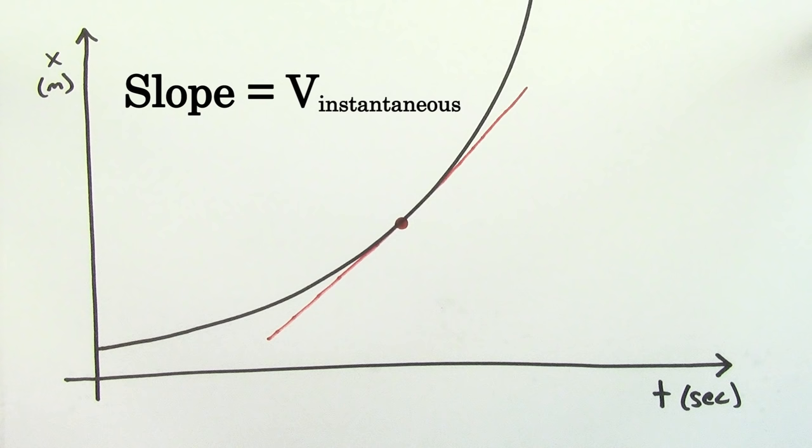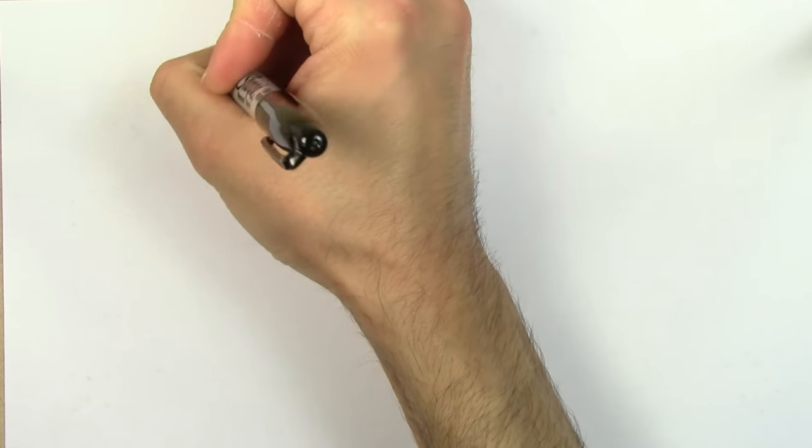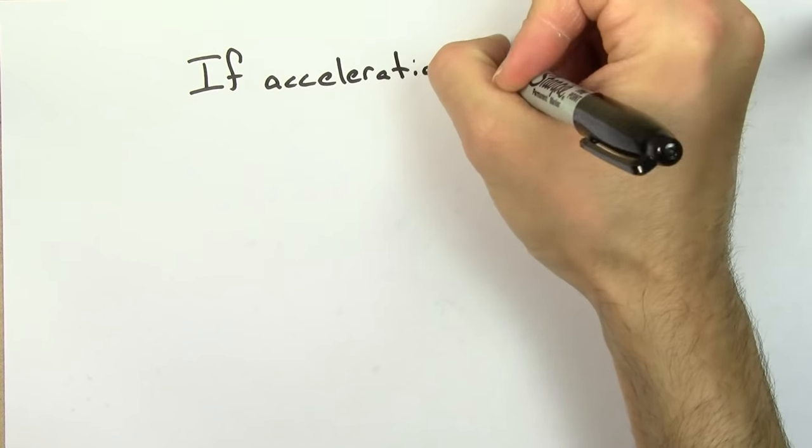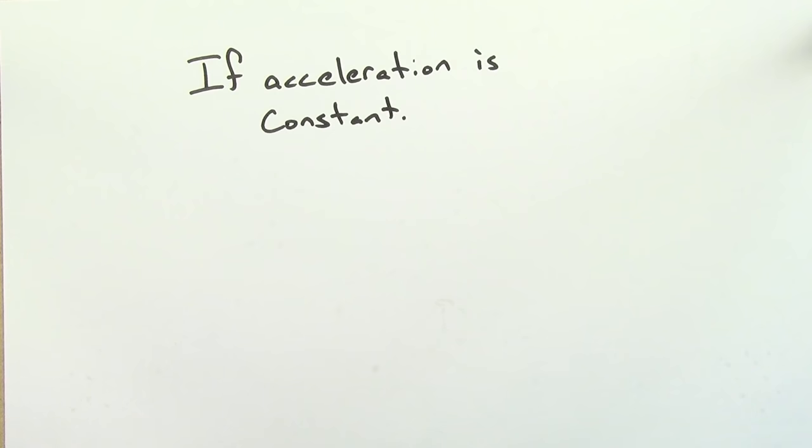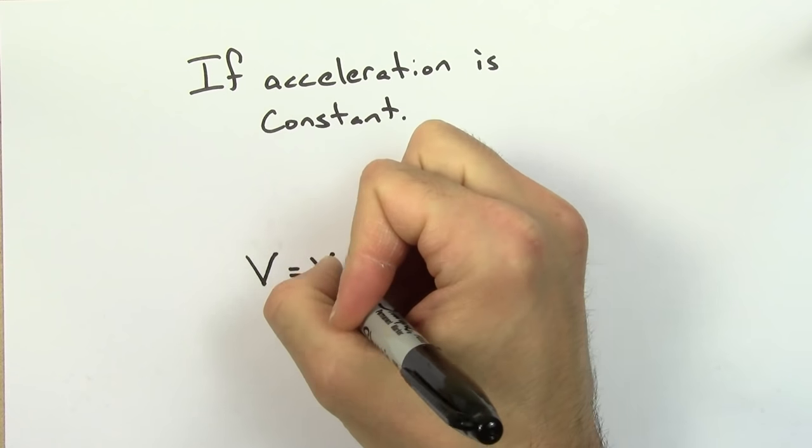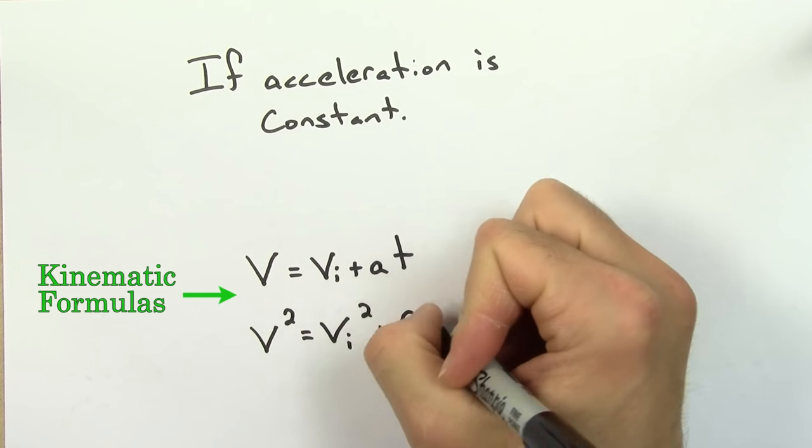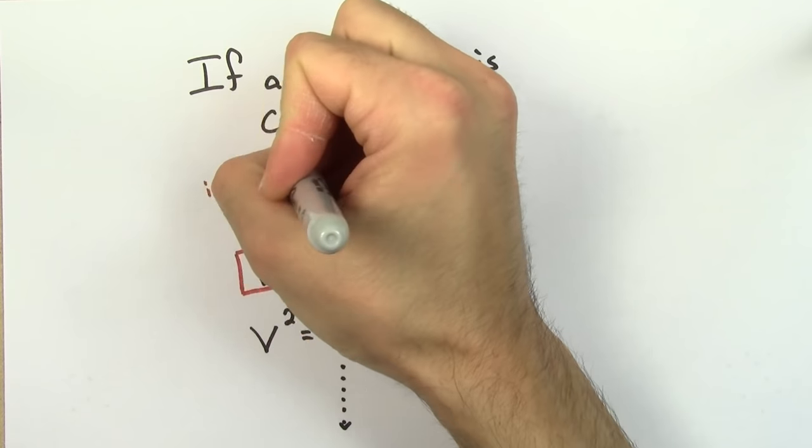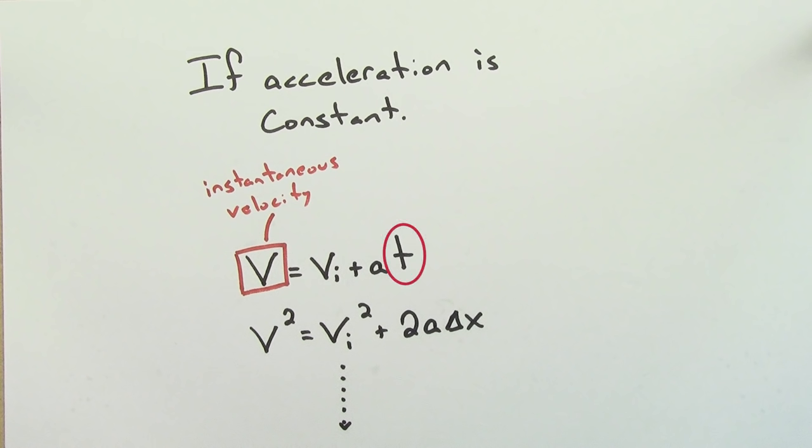Because the slope is going to give the instantaneous rate at which x is changing with respect to time. A third way to find the instantaneous velocity is for another special case where the acceleration is constant. If the acceleration is constant, you can use the kinematic formulas to find the instantaneous velocity v at any time t.